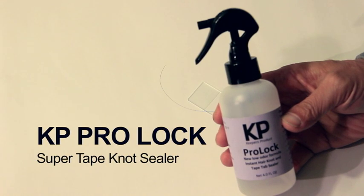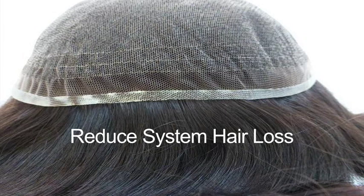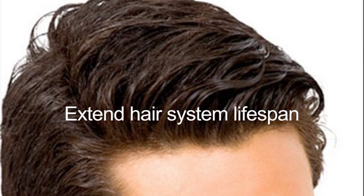Keeper's Products ProLock is an extra strength tape knot sealer that is sprayed on the inner side of the lace to reinforce hair knot strength, reduce hair system shedding, and extend the lifespan of the hair system.